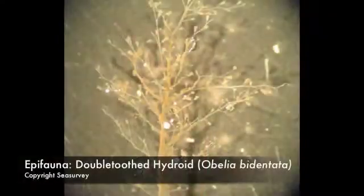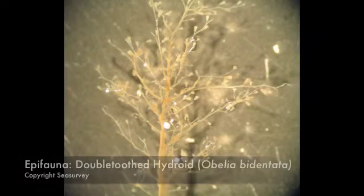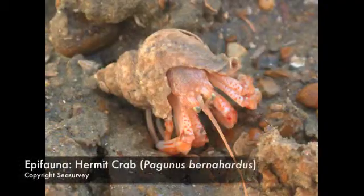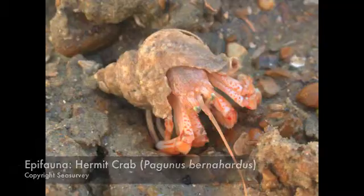The other component is Epifauna, and those are animals which live on the surface of the seafloor. They may be attached or they may be mobile. Attached Epifauna will include things like sponges, hydroids, and bryozoans. Then you'll have mobile Epifauna which will be things like crabs, hermit crabs, and also demersal fish.